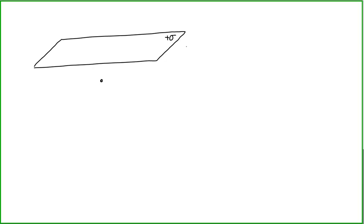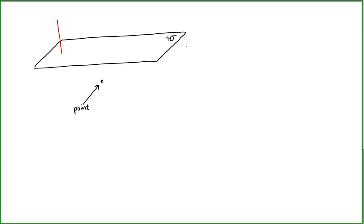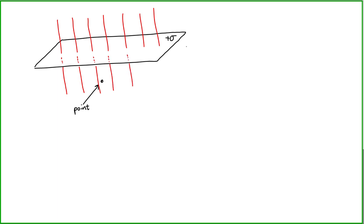Let's look at the top plate. The top plate has a uniform positive surface charge density. We want to calculate the electric field at a point in between the two plates, so I'm going to take that point right here. Being a very large plate in comparison to the distance away from the point, we can say that point is far from the edges. Being a source of positive charge, the electric field due to this large plane of charge will point away with planar symmetry.